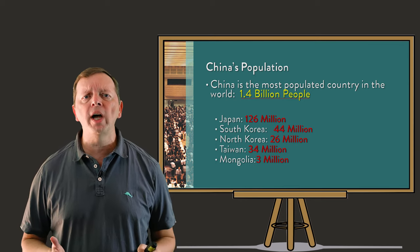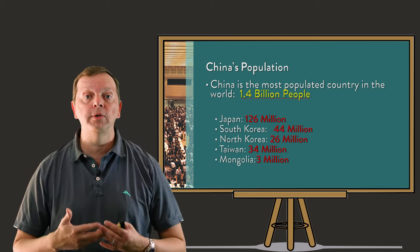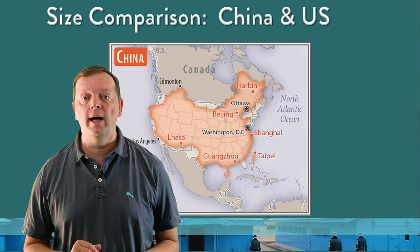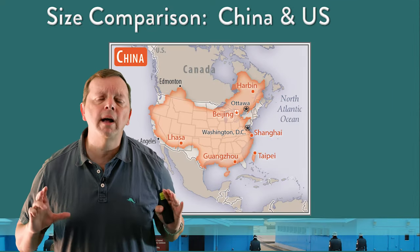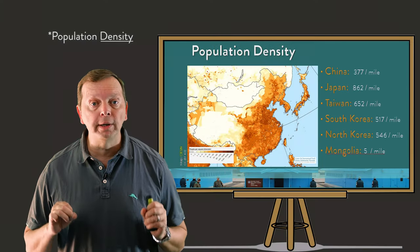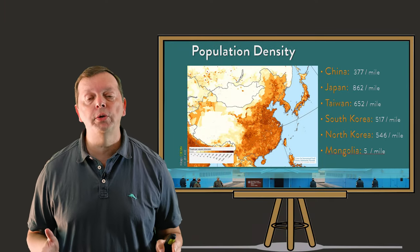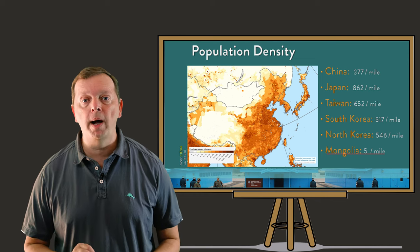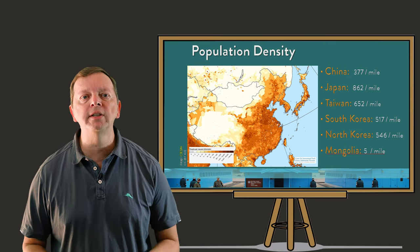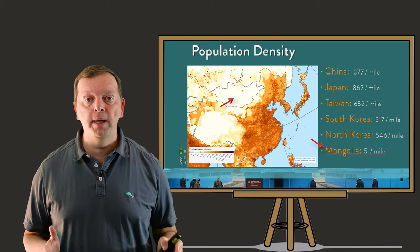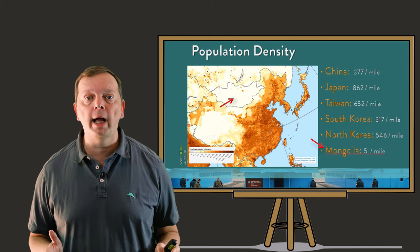What is interesting about China is that while it has four times the population, China is still about the same size as the continental United States. Each of the other countries in East Asia also have higher population densities, except for Mongolia, who averages just five people per square mile. This makes Mongolia the least densely populated country in the world.